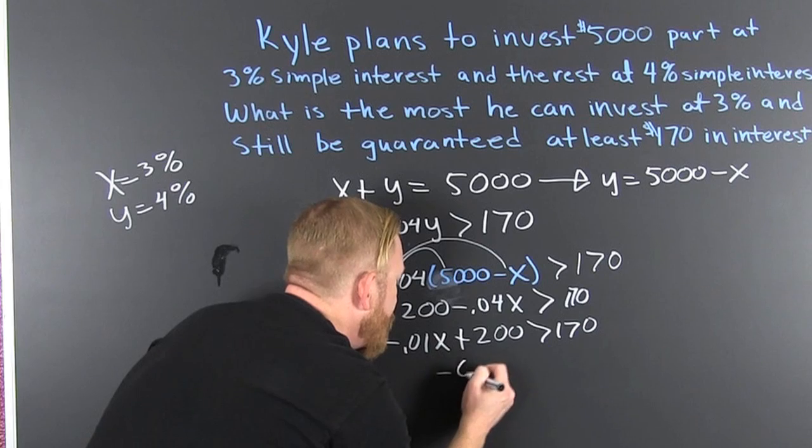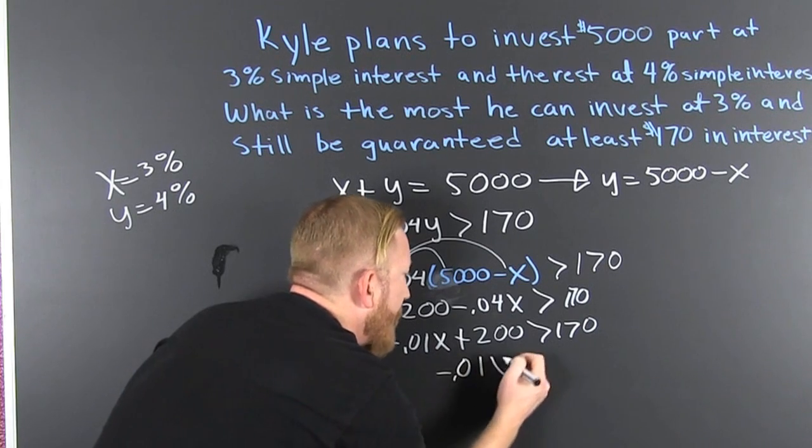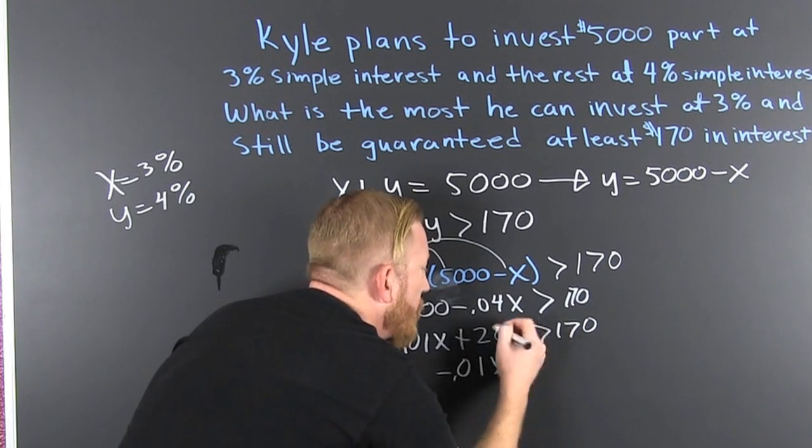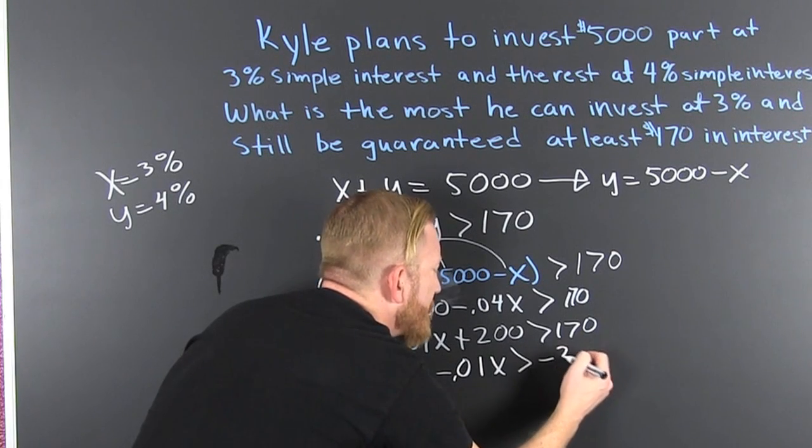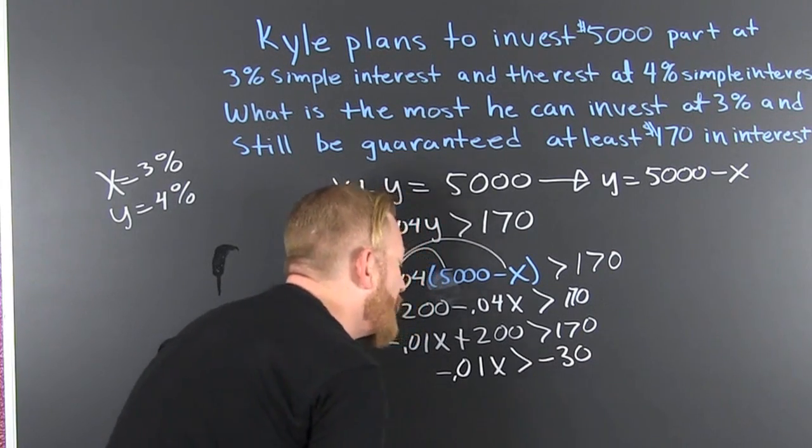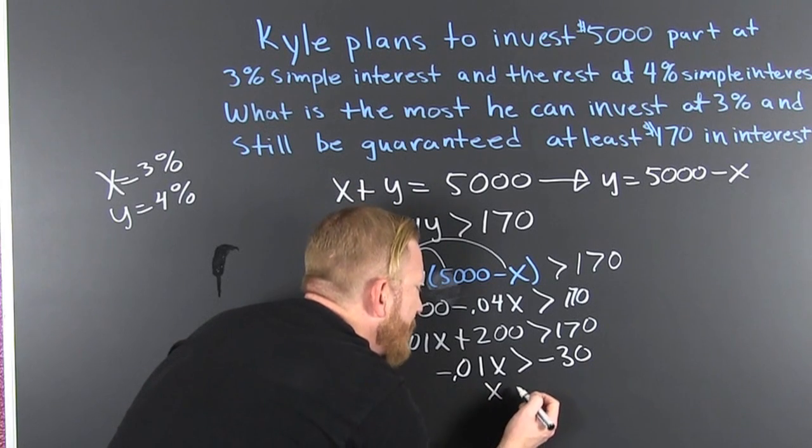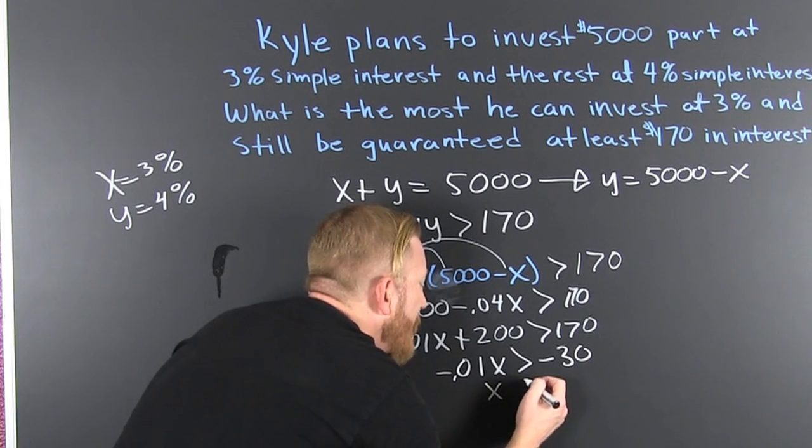So that's -0.01X that needs to be bigger than... I'm really struggling with switching the signs on this 30. Because I know whenever I multiply or divide by a negative sign, I need to flip this sign.